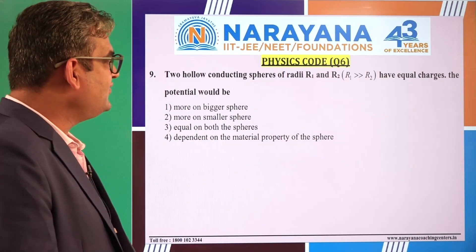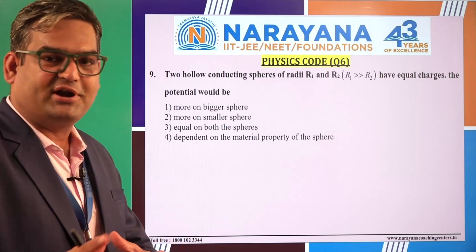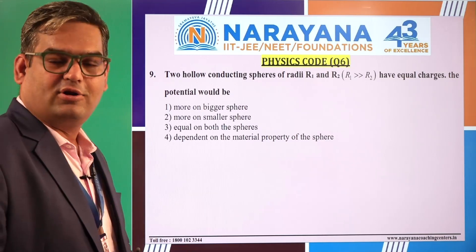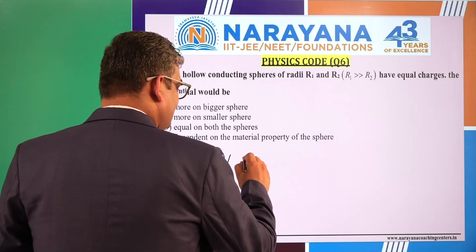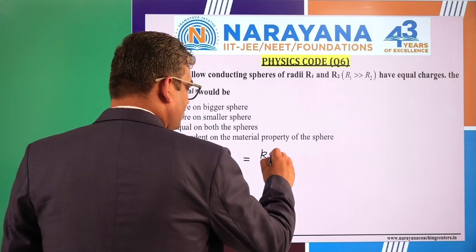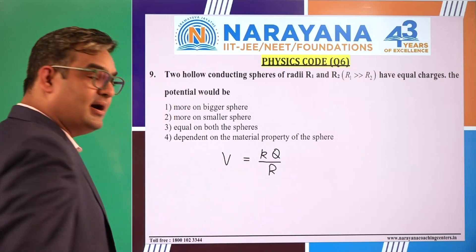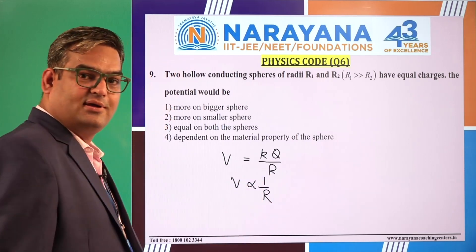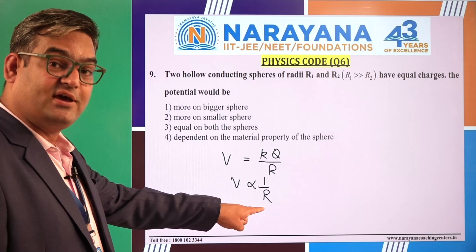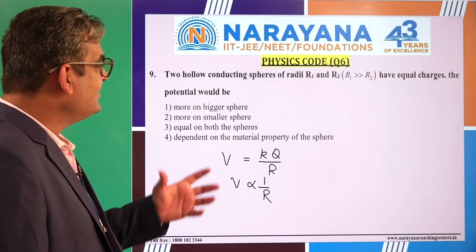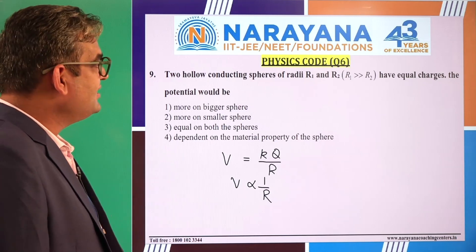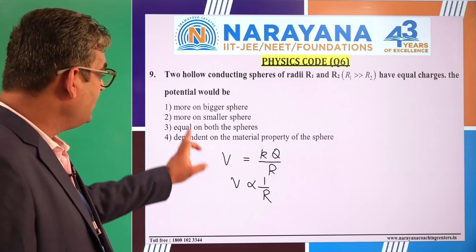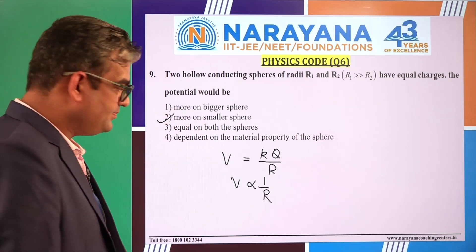Two hollow conducting spheres of radii R1 and R2, where R1 is much greater than R2, have equal charges. The potential would be? For a hollow conducting sphere, potential is given by KQ divided by R, which means potential is directly proportional to 1/R. The bigger sphere will have lesser potential for the same charge, and the smaller sphere will have more potential. So this should be the correct option.